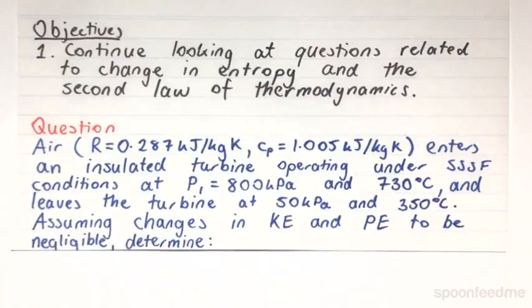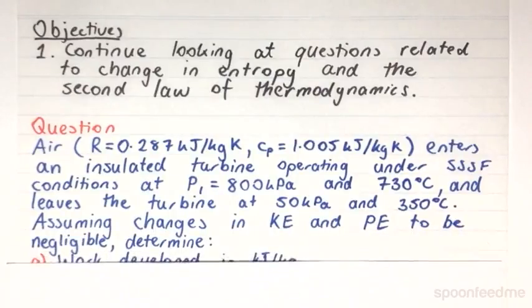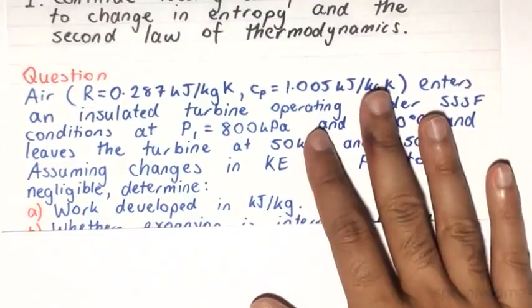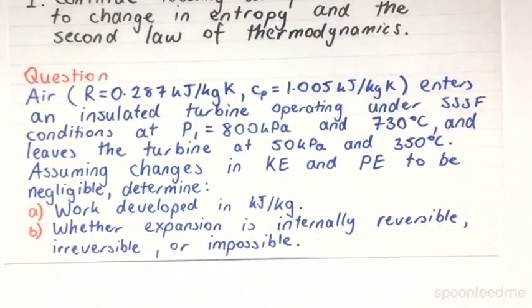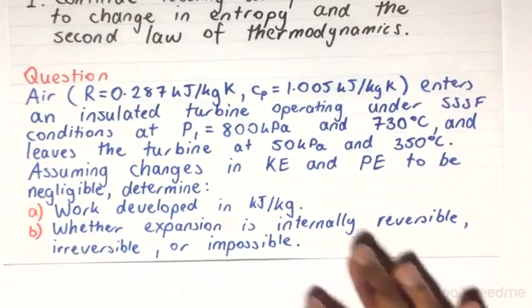So assuming that changes in kinetic energy and potential energy to be negligible, determine: a) the work developed in kJ per kilogram, and b) whether this expansion within the turbine is internally reversible, irreversible, or impossible.